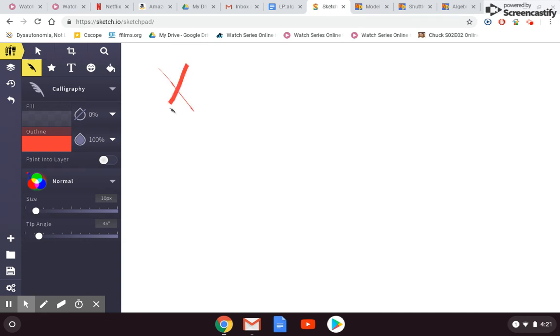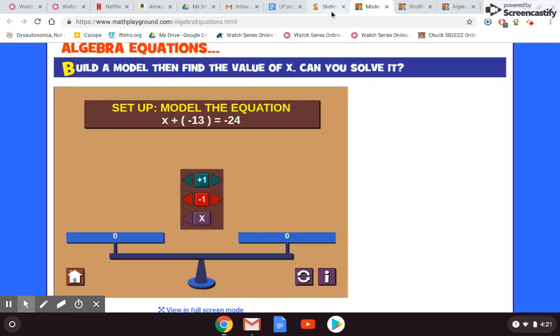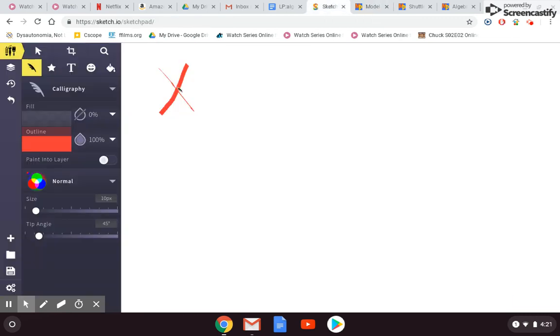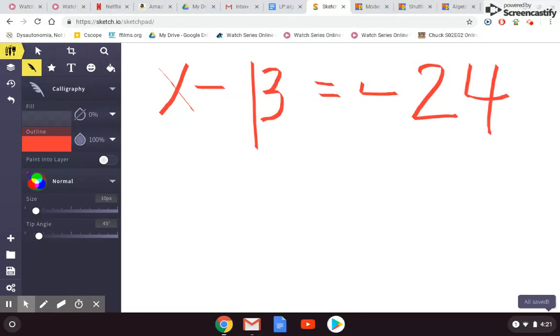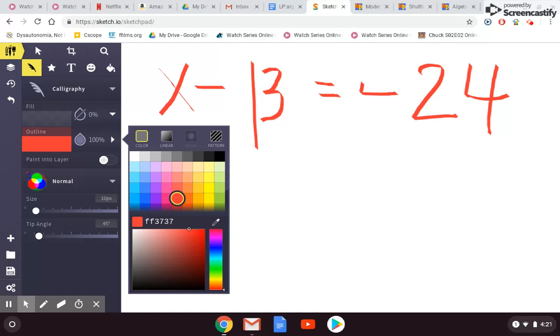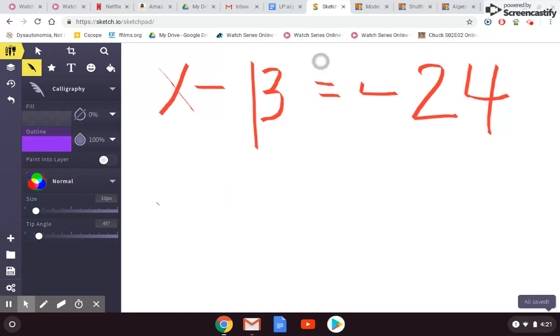We have x minus 13 equals negative 24. I like to get a different color. We're going to draw that big line through the equal sign. Circle the x, so make sure you're going back to those steps.